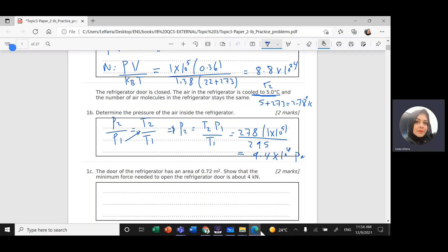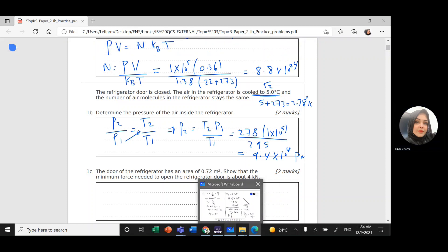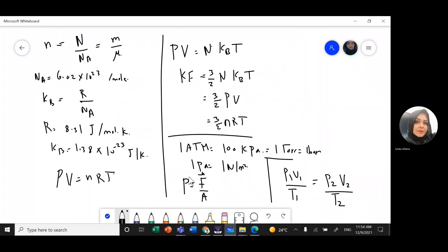This equation is the same as P1V1 divided by T1 equals P2V2 divided by T2, but the volume is constant, so I cancel the volume.